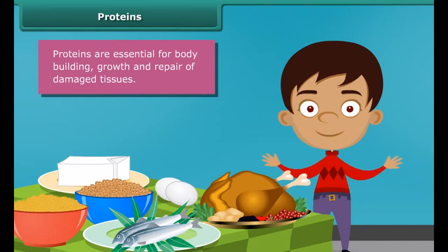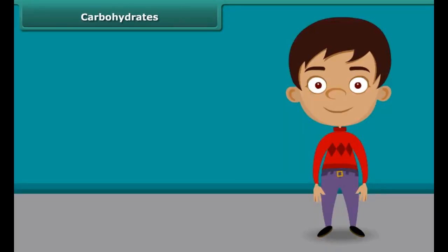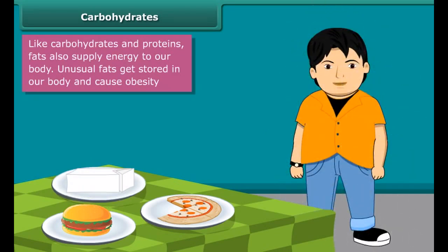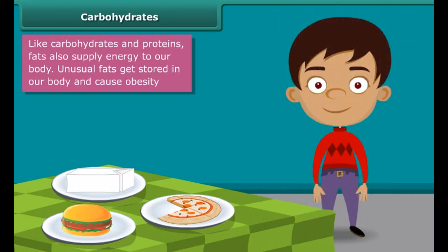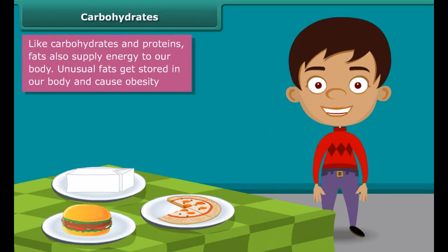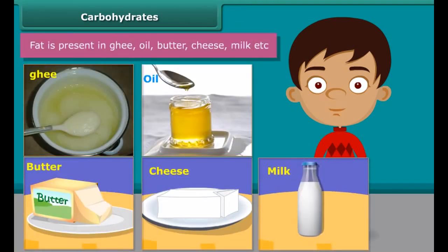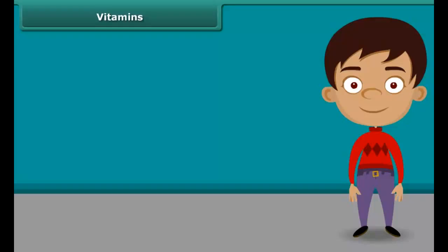Along with carbohydrates, proteins are also a source of energy. You all love pizza, burger, cheese etc., but your parents do not allow you to eat them regularly because such foods contain large amounts of fat. Fat supplies us with energy; if we don't use up this energy our bodies build up a store for future use in the form of body fat. This is the reason why people eating much oily food become obese. Ghee, oil, butter, cheese and milk are some main sources of fats.